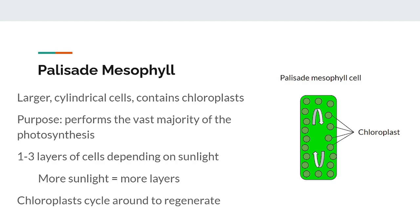Higher levels of sunlight mean that a leaf will have more layers of palisade cells to take advantage of all the energy from the sun. Leaves in the shade will likely only have one layer because it isn't exposed to enough sunlight to justify adding more photosynthetic capabilities. This difference in layers explains why shade leaves will typically be thinner than leaves exposed to direct sunlight. If we look at the palisade mesophyll cells themselves, we can see that they cycle the chloroplasts around, letting the ones at the bottom regenerate while the ones at the top are exposed to the most sunlight.